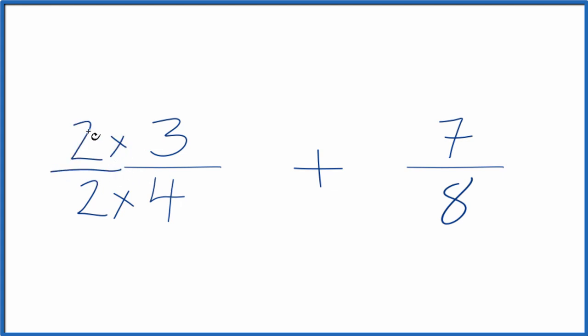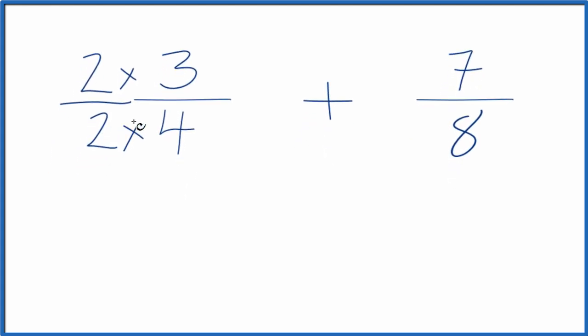And that's because two divided by two equals one. We're just multiplying three-fourths by one. We don't change the value, just the way it's represented.